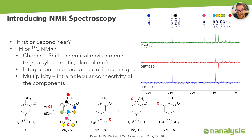Understanding NMR spectroscopy is a very important topic in chemical education. However, there is little agreement on when or how to introduce this powerful characterization technique to undergraduates — some introduce it as early as first year, some in second. One common strategy is to introduce NMR in the lecture component of introductory organic chemistry. For proton NMR, the key concepts require students to focus on three pieces of information simultaneously: chemical shift representing the chemical environment of a nucleus, peak integration corresponding to the number of nuclei, and multiplicity reflecting intramolecular connectivity. By introducing carbon NMR first, students can focus on chemical shift before dealing with integration and multiplicity. For example, the hydrochlorination of carvone can confirm only one of four possible chlorinated products by counting primary, secondary, tertiary, and quaternary carbon atoms via DEPT and 1D carbon spectra.